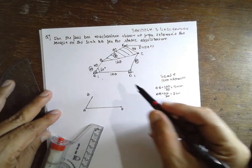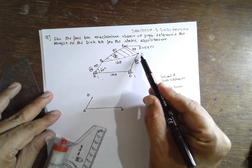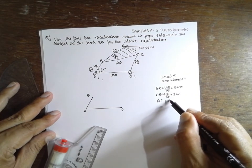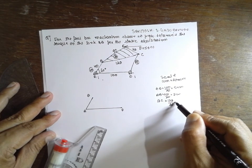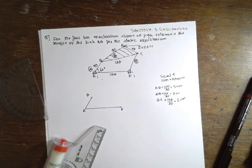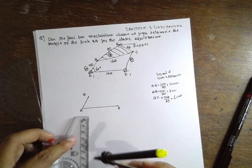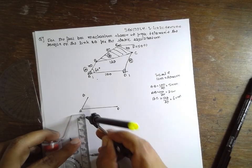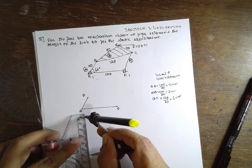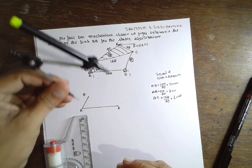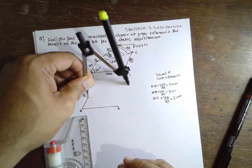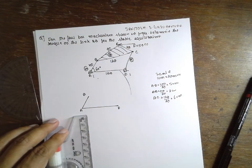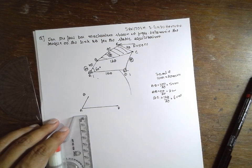Next is about BC, BC is 120. 120 divided by 20, that is 6 cm. Cut an arc from B, 6 cm.